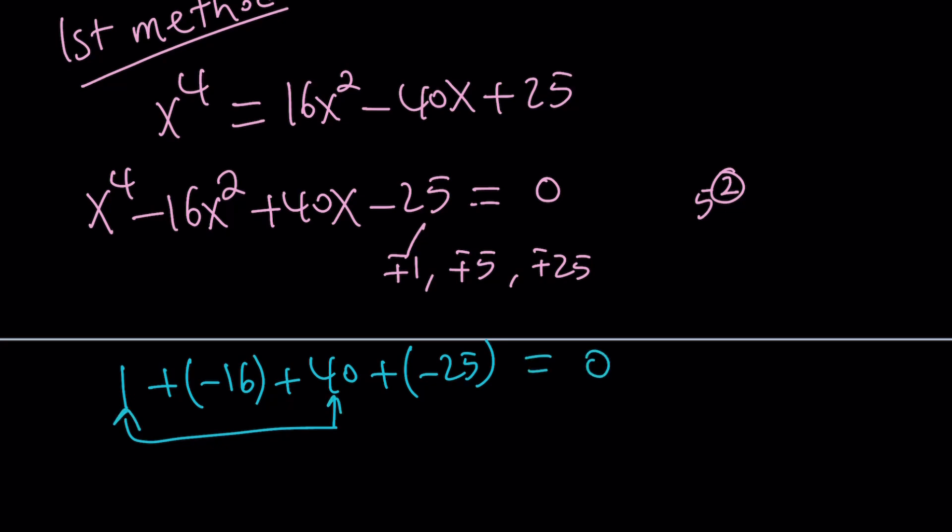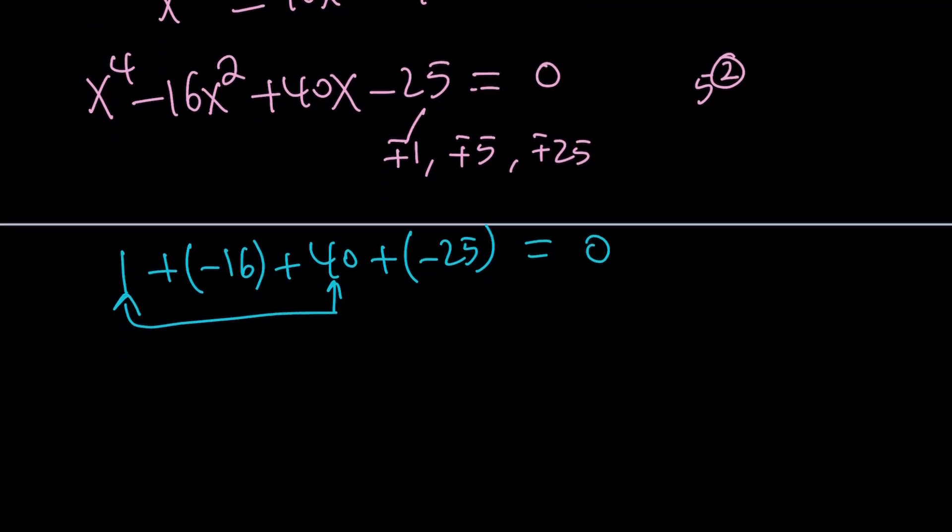So, the sum of the coefficients is 0. And, remember, in a polynomial, the sum of the coefficients is found by p of 1, which is 0. This implies that x minus 1 is a factor of p of x. p represents our polynomial here. So, this is nice, because we do know that 1 is one of the solutions. What about the other ones?